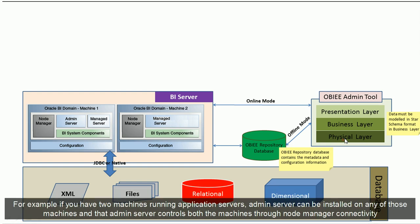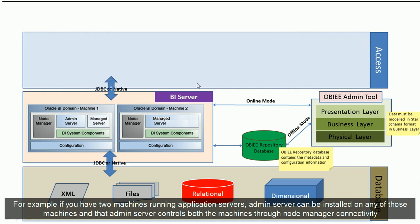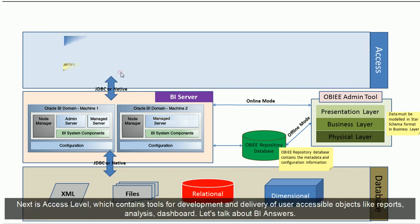For example, if you have two machines running application servers, the admin server can be stored on any of those machines, and that admin server controls both machines through the node manager. The next part of the architecture is the access layer, which contains tools for development and delivery of user-accessible objects like reports, analysis, and dashboards.